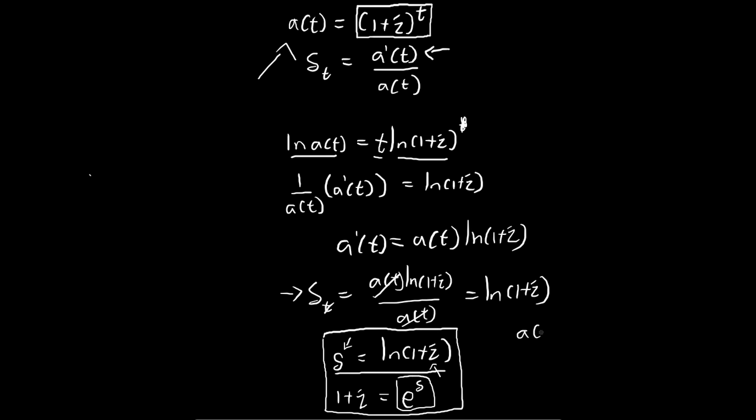Notice that the accumulation function of compound interest is equal to 1 plus i to the power of t. So we can actually write this as e to the power of delta t.